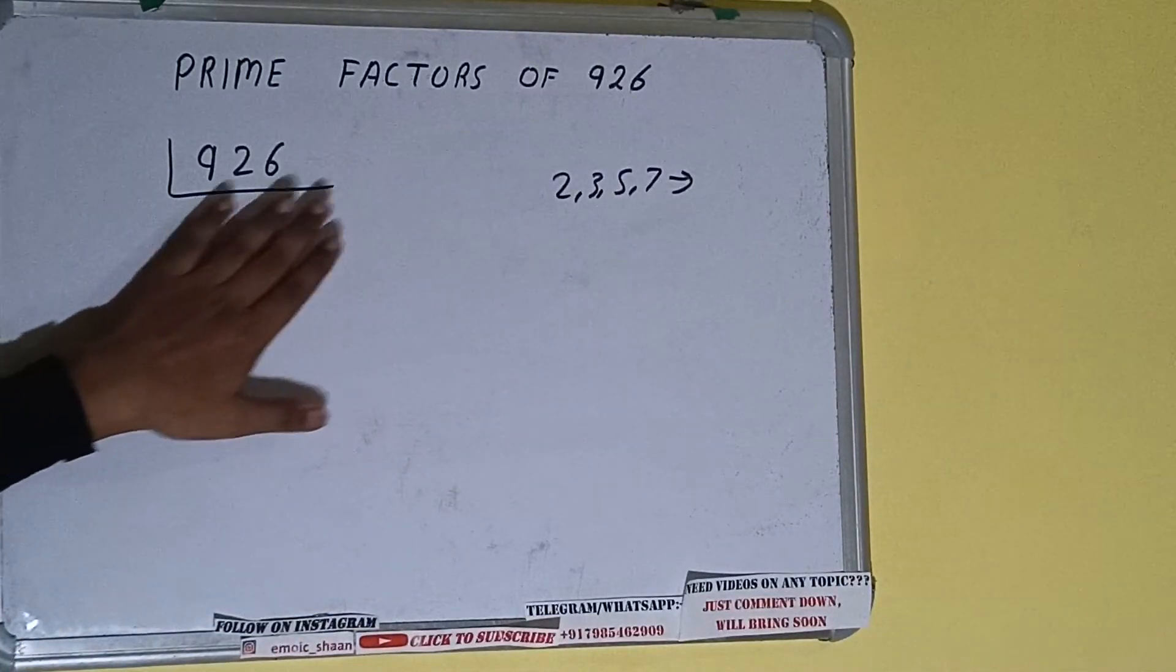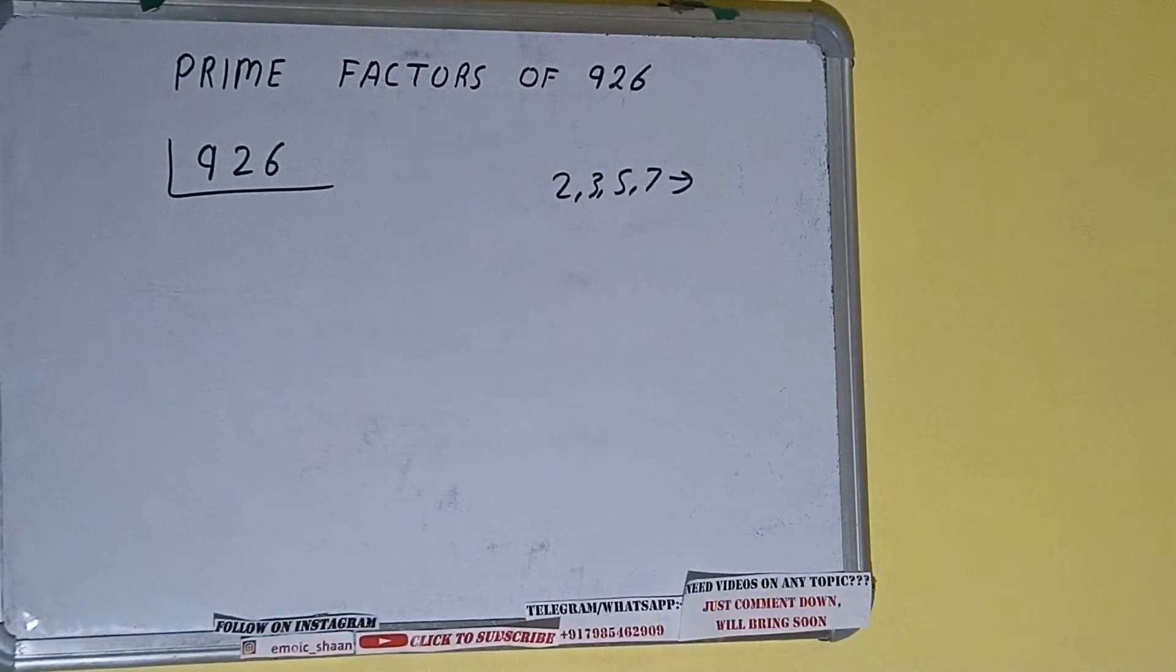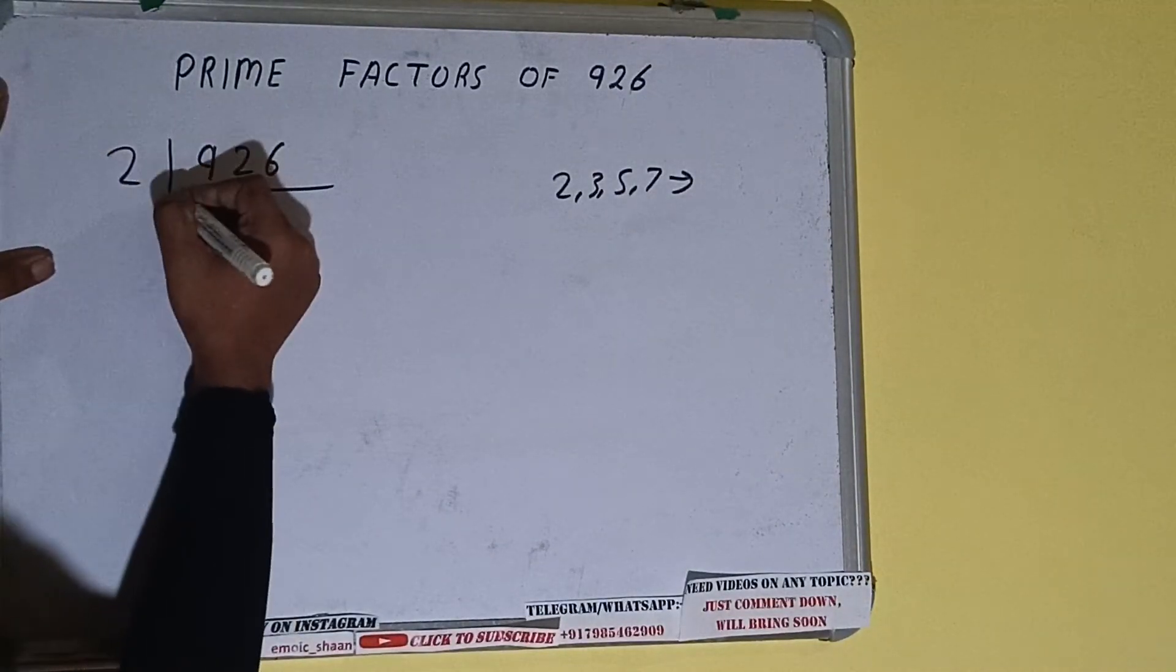We'll check with the lowest prime number we have, that is 2. Is the number 926 divisible by 2? Yes it is, because the number is even. So divide it and we'll be having 463.